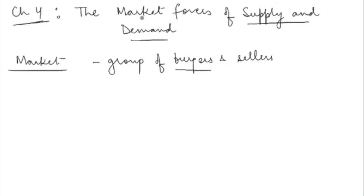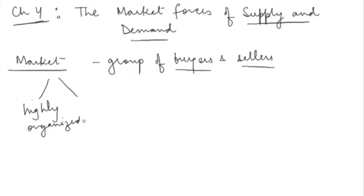The buyers determine the demand and the sellers determine the supply. Now, there is no uniformity across markets. If you look around, you will notice that some markets are highly organized whereas some are not organized at all. A highly organized market has complete information — consumers and suppliers know exactly what's happening, all buyers and sellers come to one place and purchase or sell the commodity at one time, ensuring no differences or heterogeneities in the market.